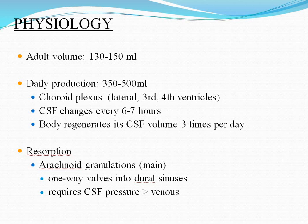Physiology of the CSF: the adult volume is 130–150 ml. Daily production is 350–500 ml. Production takes place in the choroid plexus of the lateral, third, and fourth ventricles. CSF changes every 6–7 hours, and the body regenerates its CSF volume 3 times per day.